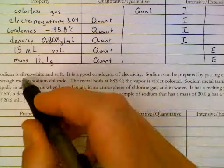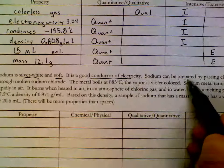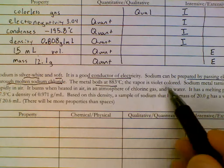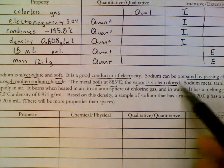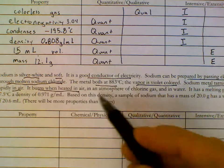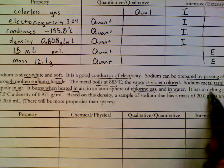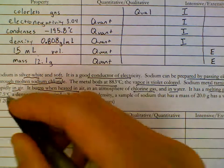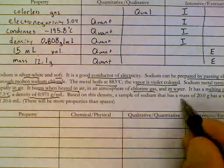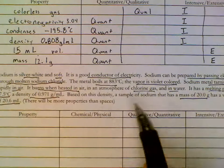Sodium is silver white. Soft. Good conductor of electricity. Can be prepared by passing electricity through molten sodium chloride. Boils at 883. Vapors violet color. Tarnishes in air. Burns when heated. Reacts vigorously with water. Has a melting point of 97.5 and the density of 0.97 grams per ml. Based on this density, has a mass of 20 grams and a volume of 20.6 ml. There are more properties than spaces, so I'll just pick some.